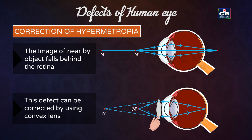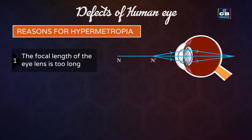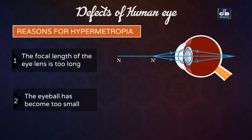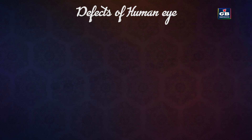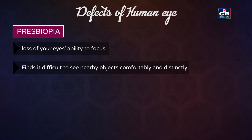Hypermetropia can be corrected by using a convex lens, which makes the image fall on the retina so the person can see nearby objects clearly. Reasons for hypermetropia: this defect arises either because the focal length of the lens is too long, or the eyeball has become too small.